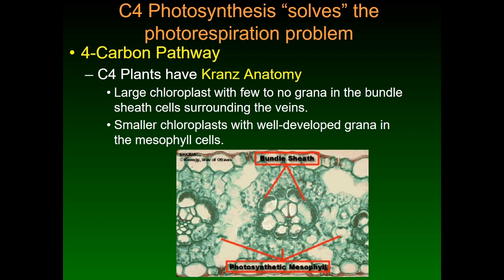The mesophyll cells, with well-developed grana — those membranes where the light reactions take place — are going to be specialized in the light reactions. The bundle sheath cells are going to be specialized in the Calvin cycle because they don't have very many grana but have relatively large cells with lots of stroma, which is where all those enzymes including Rubisco are. That's where carbon fixation takes place. This separation also keeps oxygen — released in the light reactions — over in the mesophyll cells, so the bundle sheath cells don't have to deal with as much oxygen.